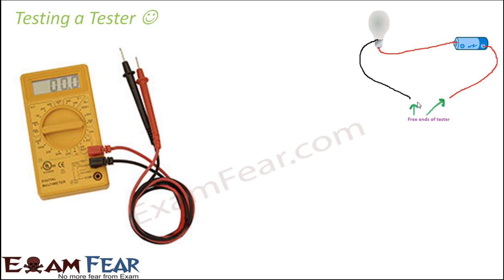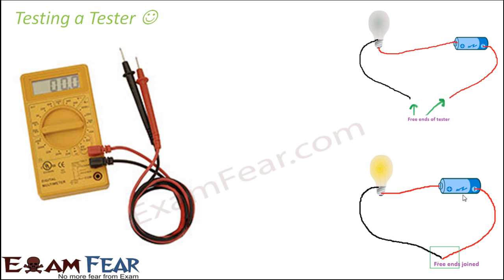To verify the tester is working, we join the two free ends — if the bulb glows, the tester is working because current is flowing through the circuit. Now if we introduce a good conductor between the ends, the bulb should also glow. If we introduce an insulator, the bulb will not glow because current will not be allowed to flow through the circuit. That is how we can test conductivity.